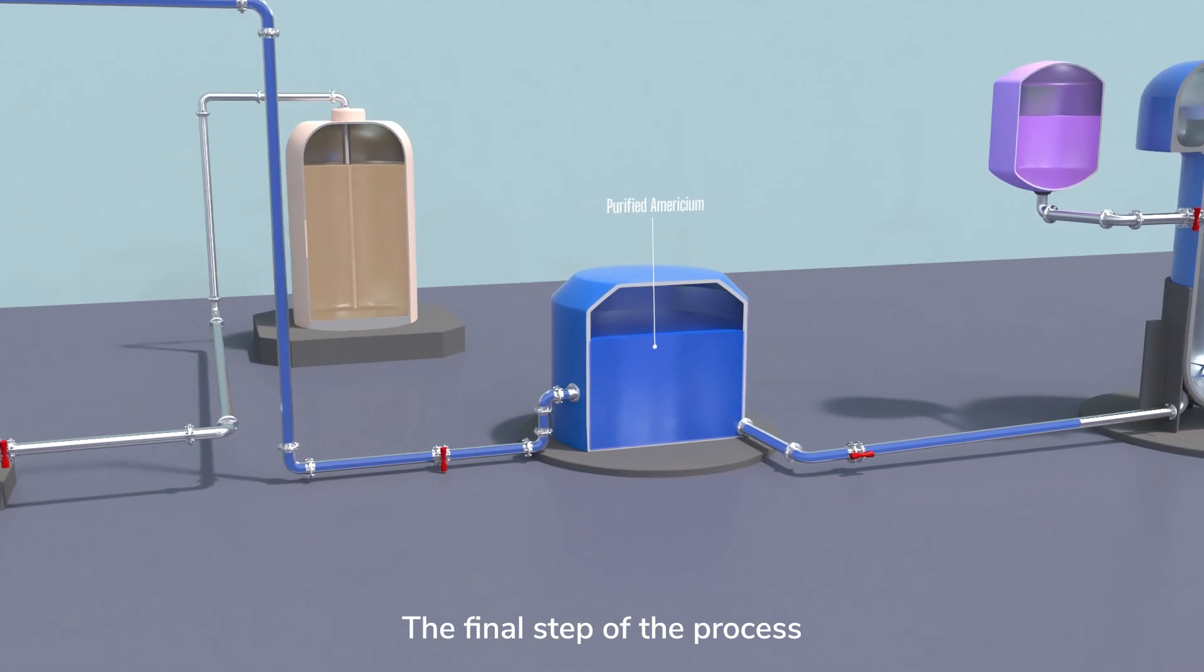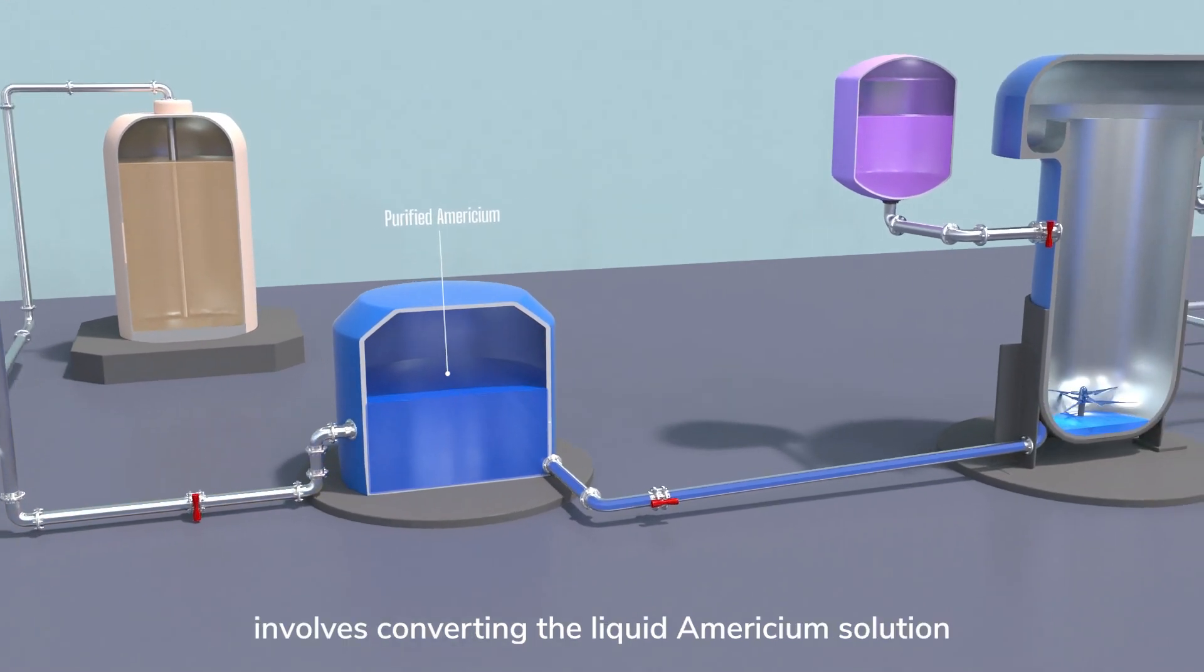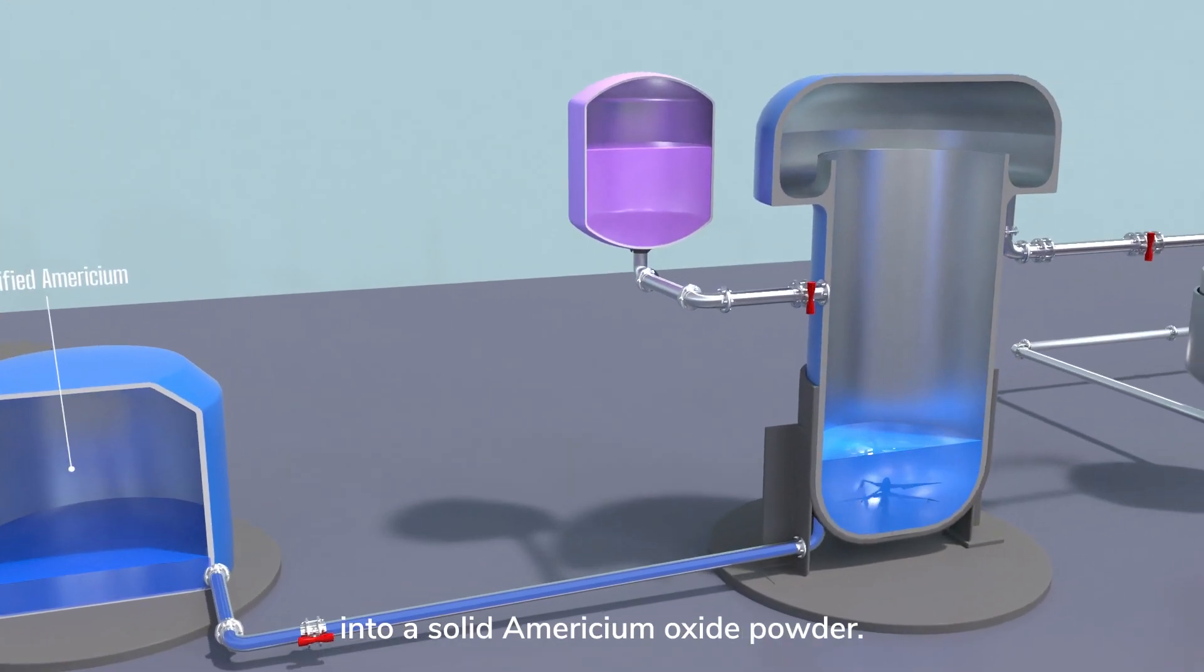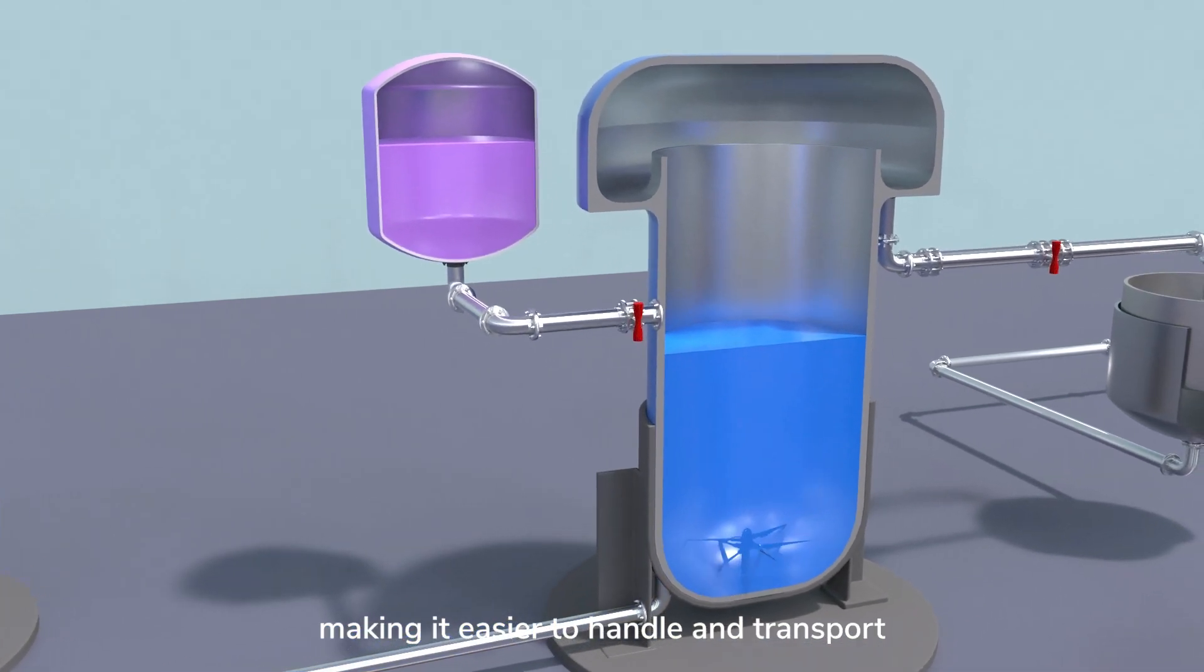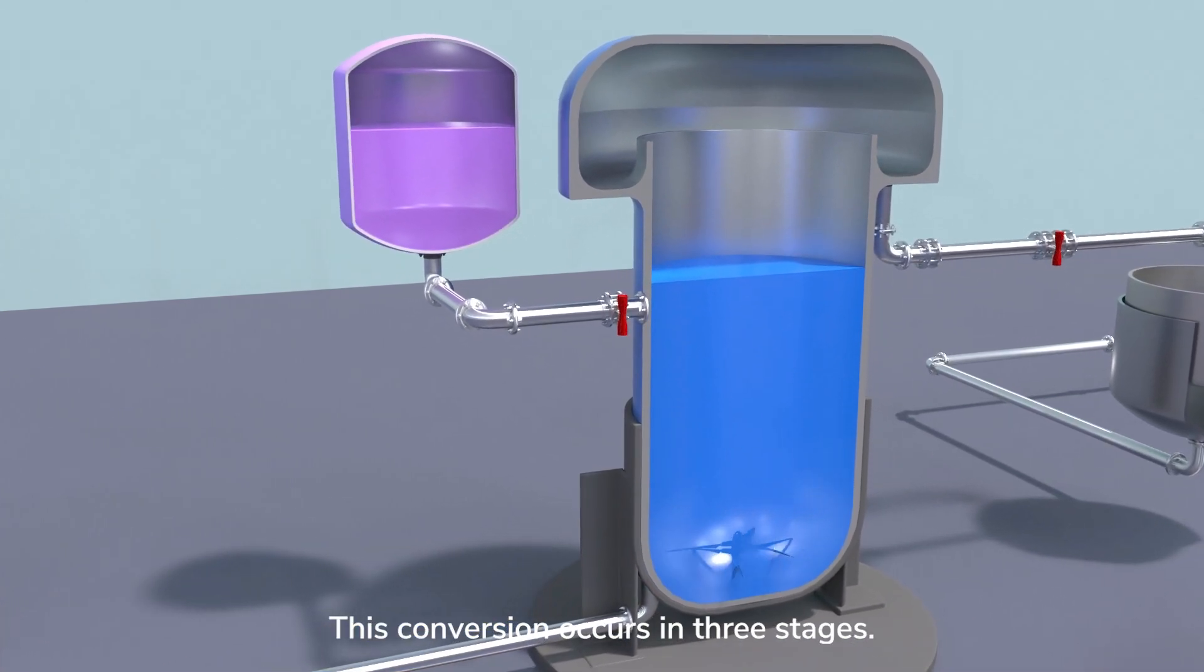The final step of the process involves converting the liquid Americium solution into a solid Americium oxide powder, making it easier to handle and transport. This conversion occurs in three stages.